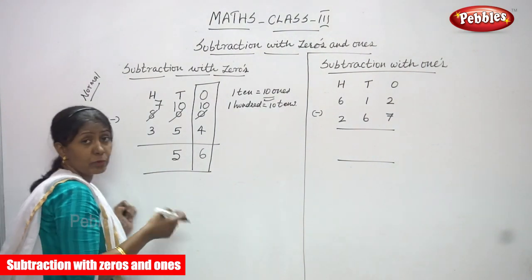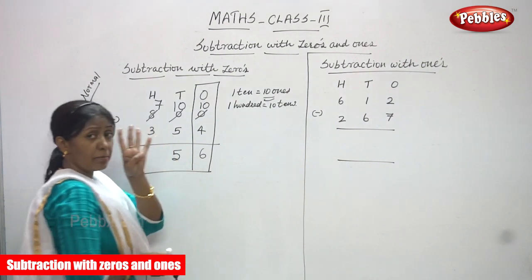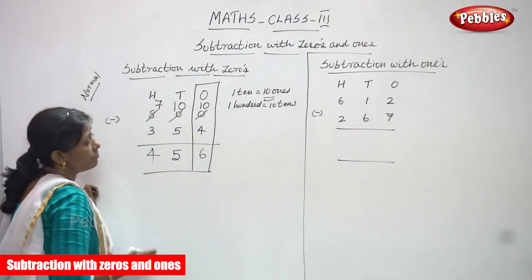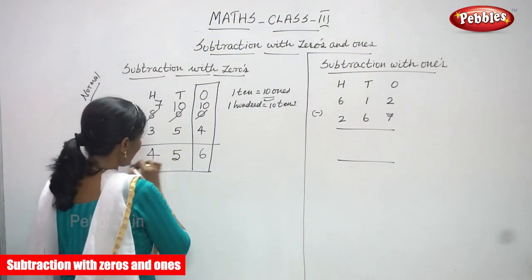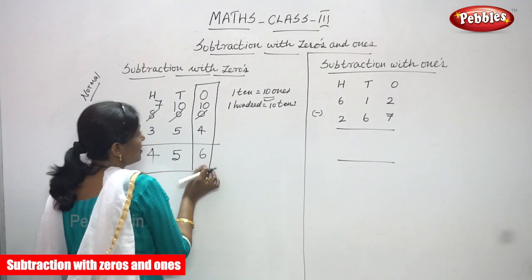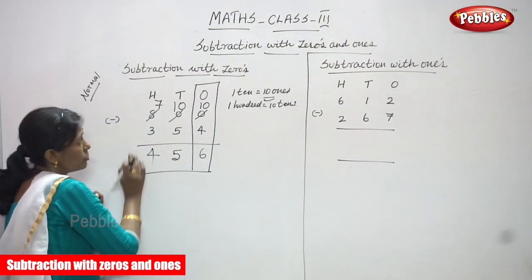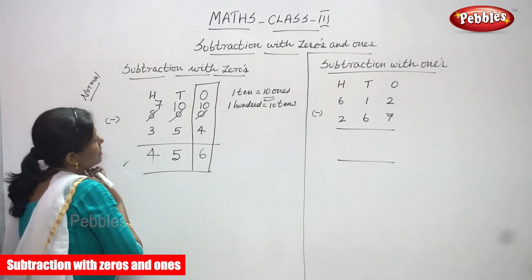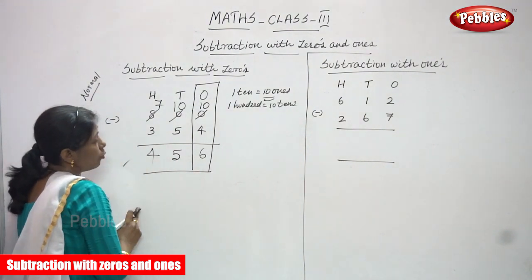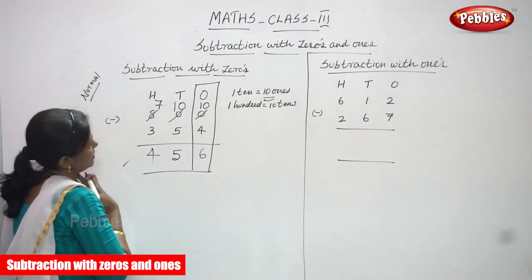So again you have to start doing the backward counting: after three, four, five, six, seven. So what is the number? Four. So you have to write four. The answer is 456. This is the right answer. First I concentrated only the ones place, then I concentrated the tens place, then finally I did the subtraction with the hundreds place. So the answer is 456.